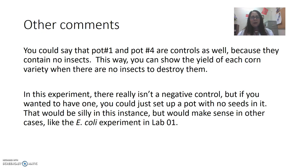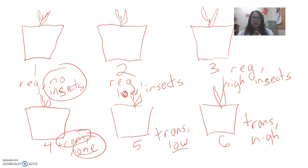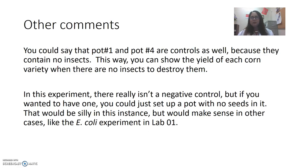You could also say that pot number one and pot number four are controls as well, because they have no insects — they show what the yield is when no insects are present. So they're a form of control too. But the primary control group in this experiment is the pots that contain regular corn.